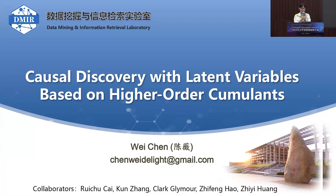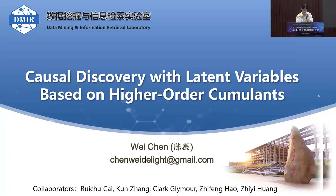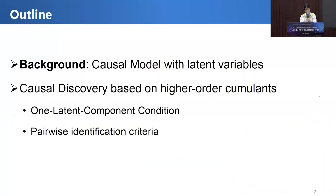Today I will give a talk about causal discovery with latent variables based on high-order cumulants. This work was collaborated with Zhui Chu Cai, Kuen Zhang and Kraft Liman, Zhifenghao and Zhiyihuan. I will give a brief introduction about the causal model with latent variables, and then I will show how to do causal discovery based on high-order cumulants.